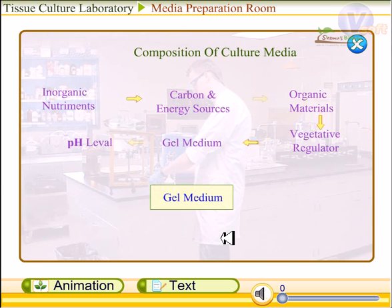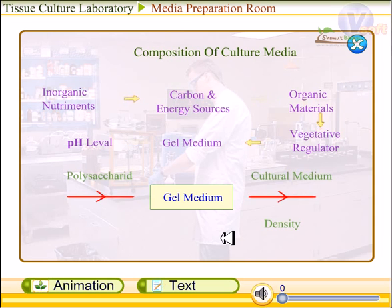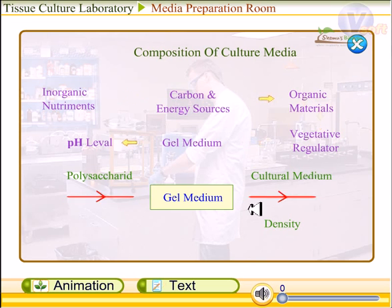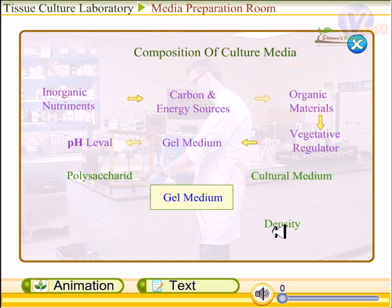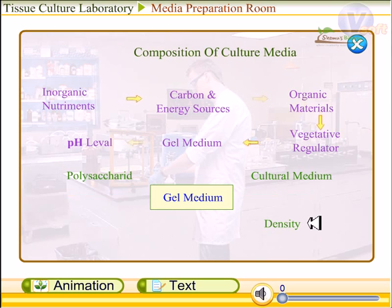We also have the gel or solidifying media, which is generally a polysaccharide added to the culture media to make it highly dense, converting it into a solid state. This solid state provides support for the plant that we implant in this medium.